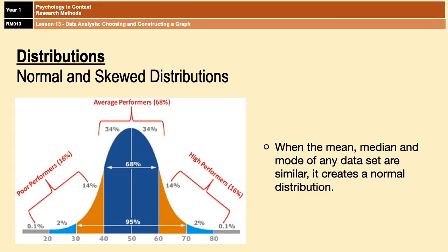It's a bell-shaped curve that you can see on the screen now, in which the majority of the scores are located in the middle area of the curve. The majority of the scores are close to the mean, median, and mode, with very few people at the extreme ends.